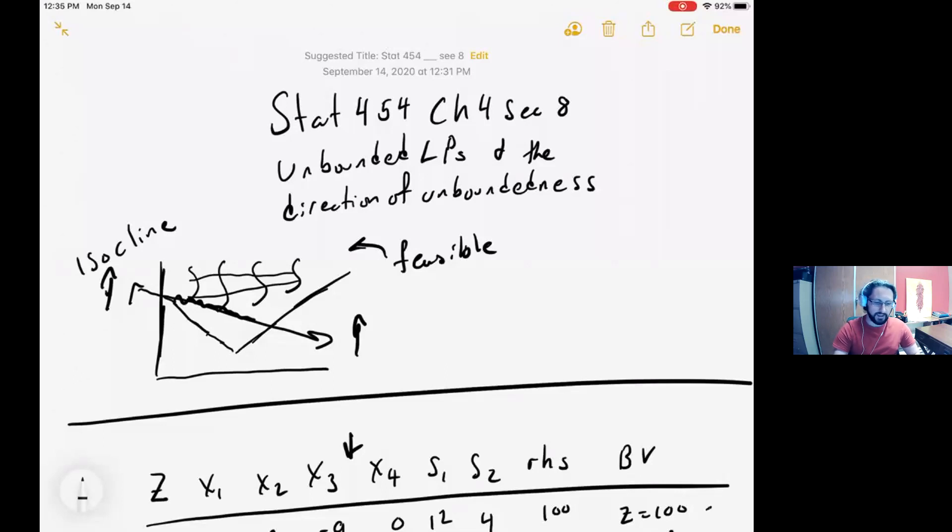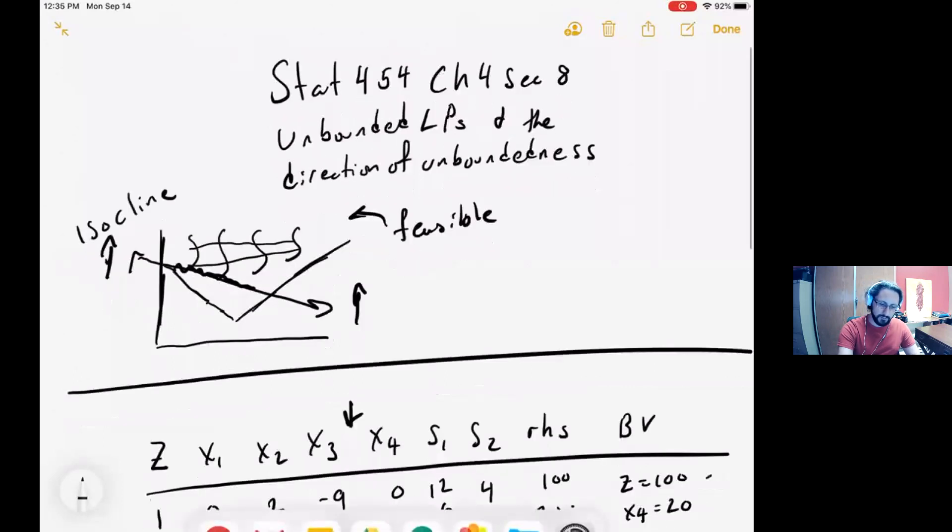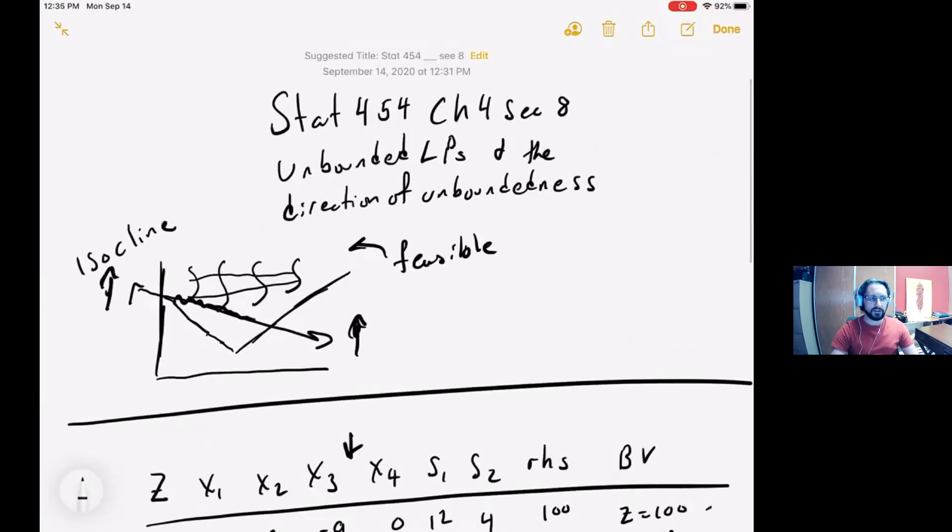but as I take the isocline and move it upwards, increasing the values of the objective function, it still stays inside that feasible region. The isocline will always stay inside the feasible region, yielding higher values of the objective function no matter how high it goes. This is the thing that classifies the LP as an unbounded LP.